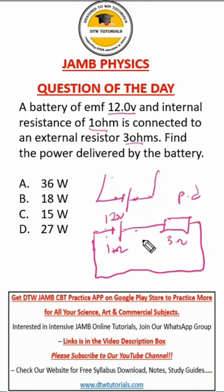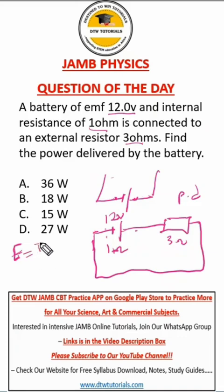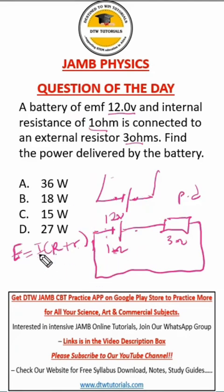We need to know the current that this battery can supply. Remember our formula: E — total EMF — is equal to I times (R plus r), where R is the external resistance and r is the internal resistance. We're looking for I, so that would be I equals E over (R plus r).